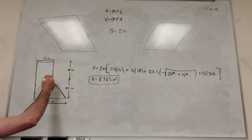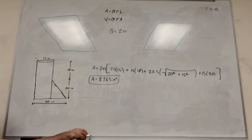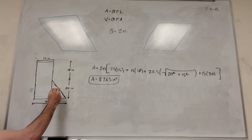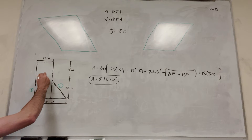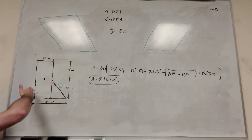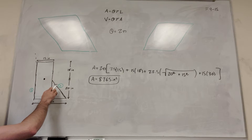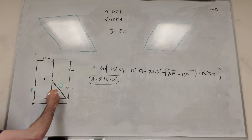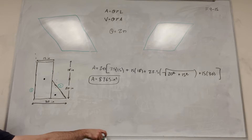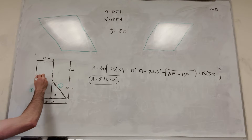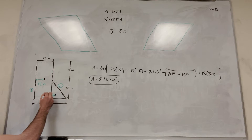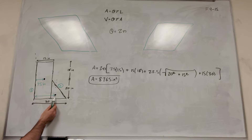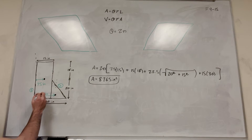Let's label the rectangle as segment 1 and the triangle as segment 2. The center of mass of the rectangle is at the middle, so r̄₁ = 7.5 inches — that's half of 15. For the triangle, we know the center of mass is one-third of the way from the base, so with respect to the y-axis that gives us 15 inches plus one-third of 15 inches, which is 15 + 5 = 20 inches. So r̄₂ = 20 inches.